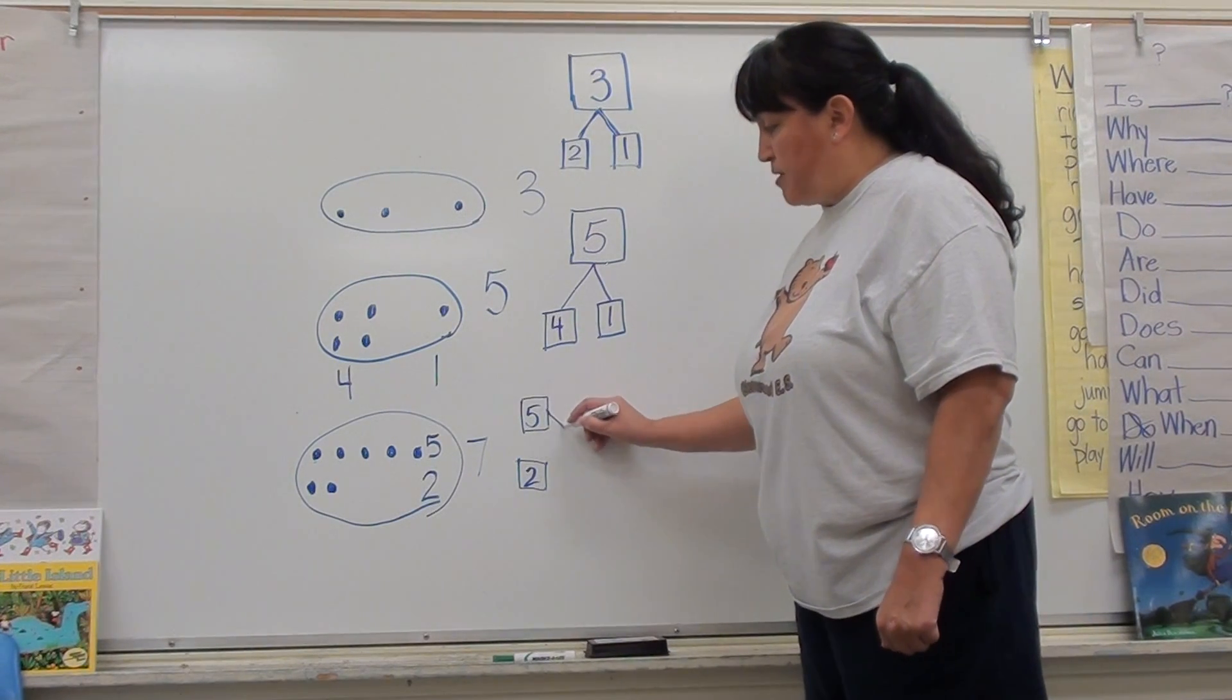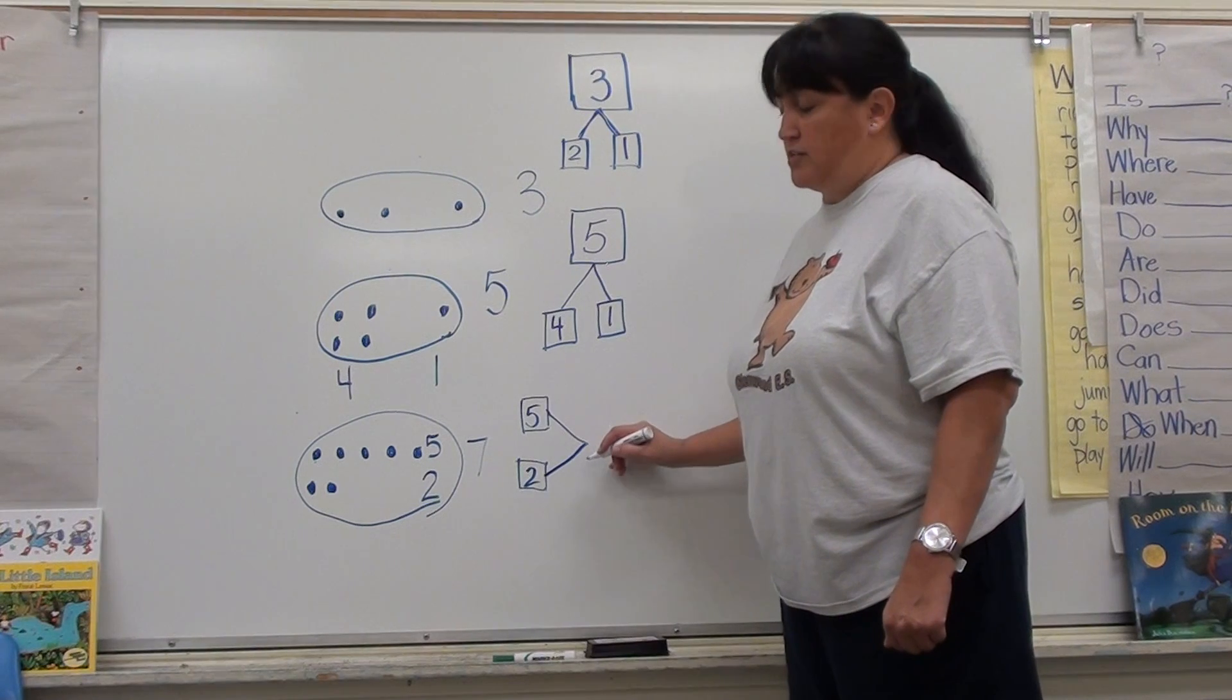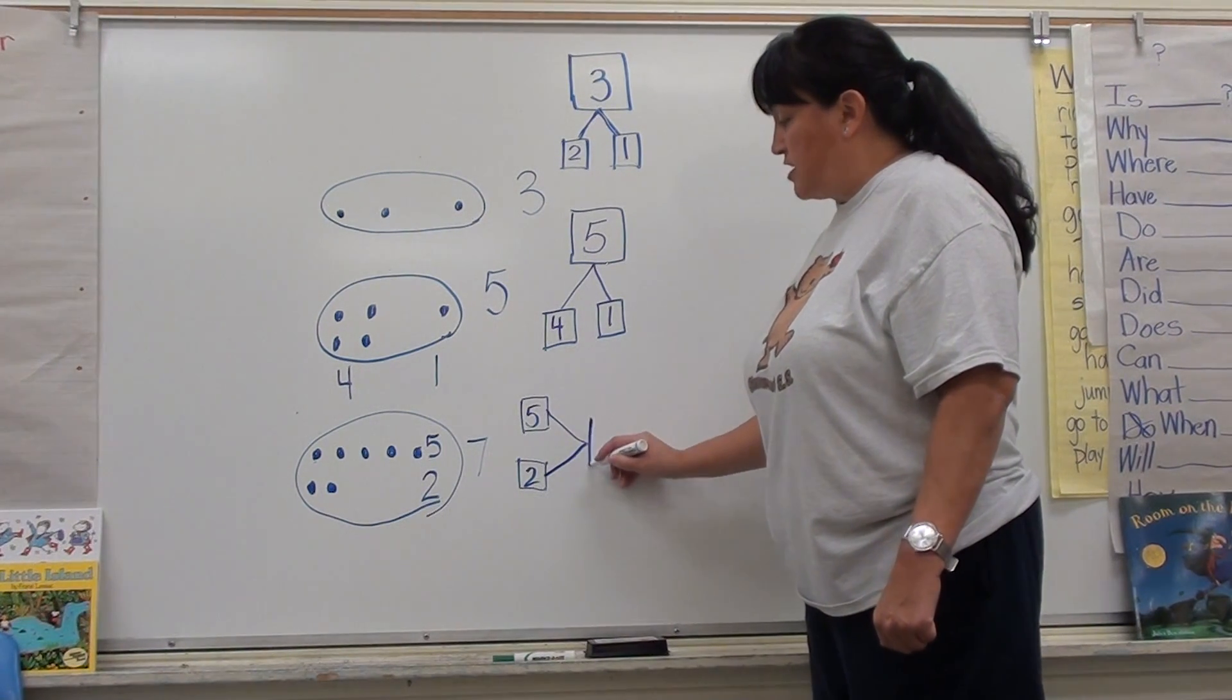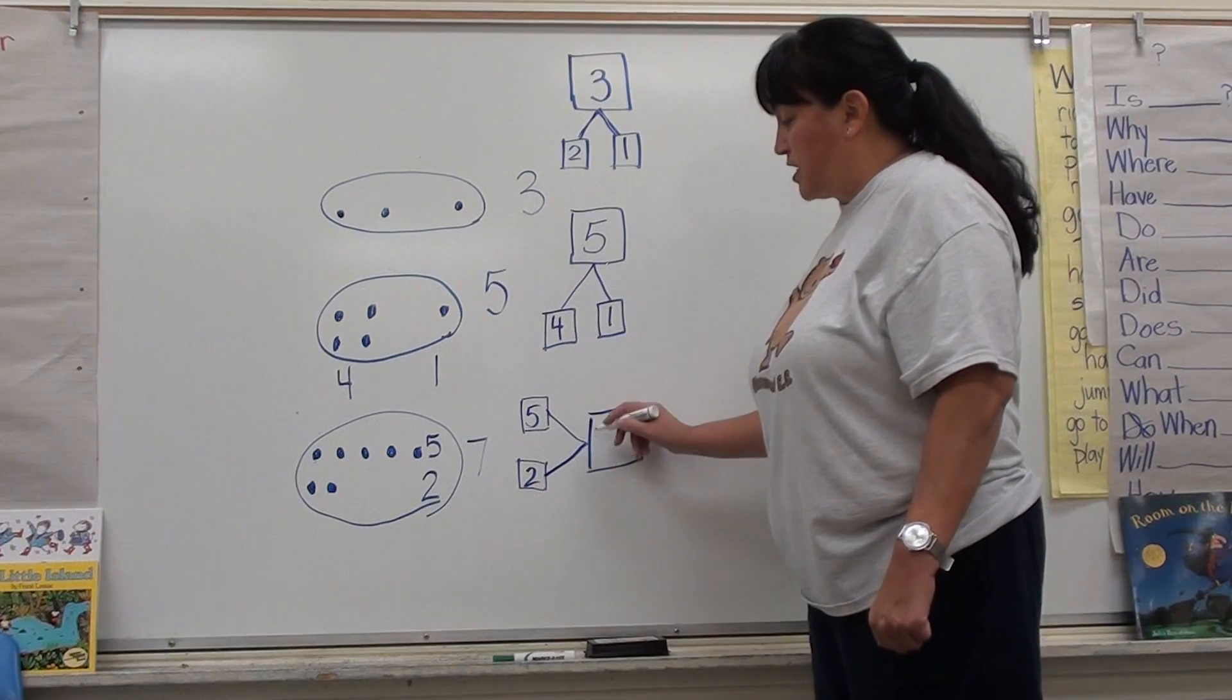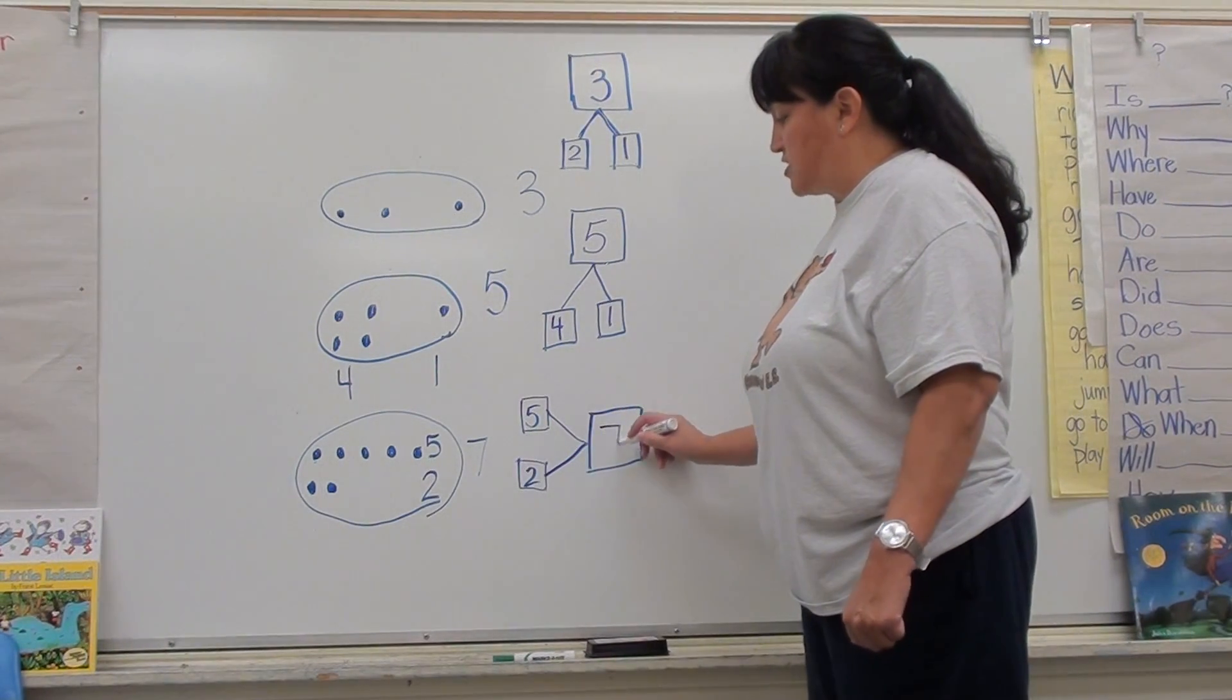Now I'm going to put my bonds that put these two numbers together. So if I put the five and the two together, I'm going to get my whole number, and that is the seven. And I write it just like this.